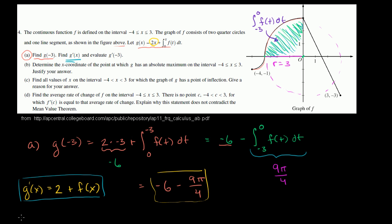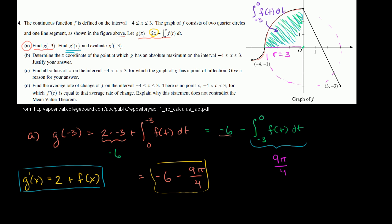And then we need to evaluate it at -3. So g'(-3) is going to be equal to 2 plus f(-3), which is equal to 2 plus, and let's look at our, let's see what f(-3) is. This is our function definition.